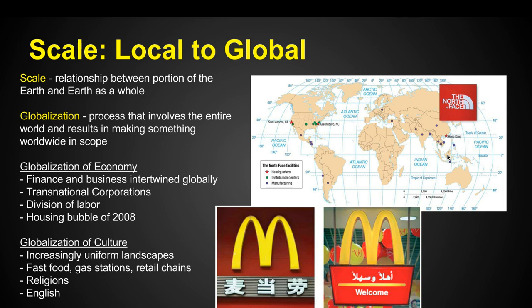One of the things we find when we examine scale, if we're zoomed all the way out, we get into the term of globalization, which is the process that involves the entire world and results in making something worldwide in scope. Even if we zoom into a local scale, a lot of times we're seeing aspects that are similar to different places across the globe — this is globalization. For example, we're seeing McDonald's, which is a development from the United States, but now we're seeing it in China and Dubai, all across the globe.